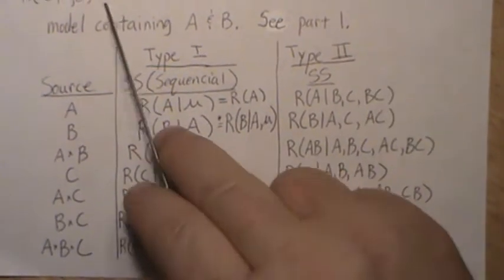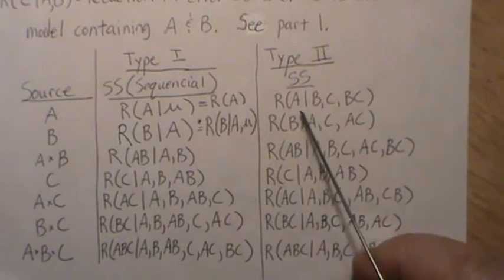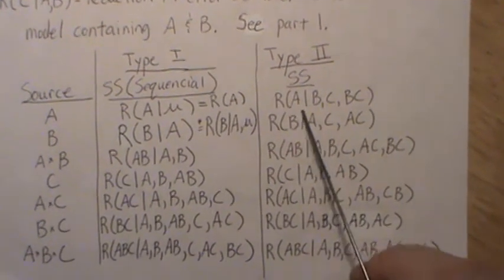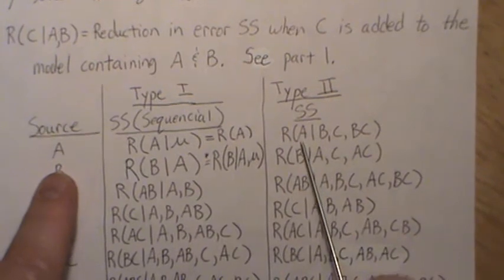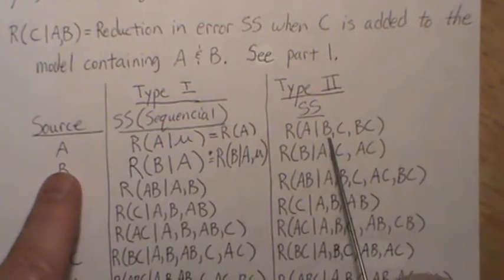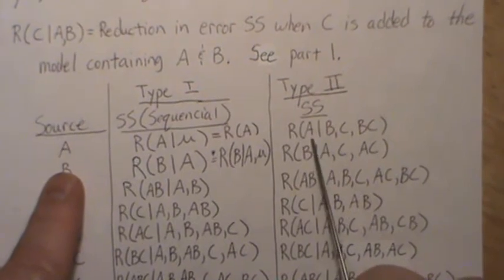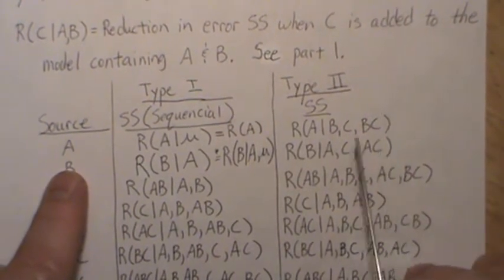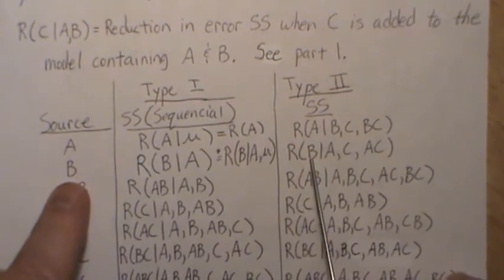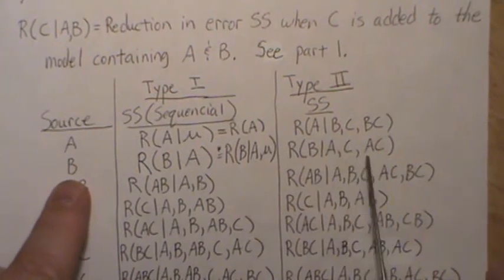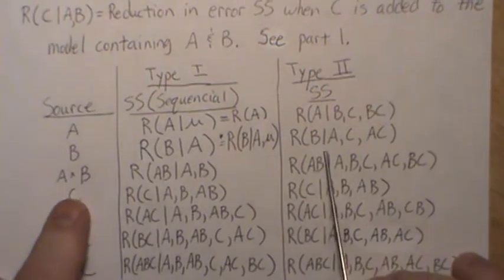For type 2 sums of squares, the order in which the terms are added to the model does not matter. What matters is higher-order terms. For R(A), it's the reduction in the sum of squared error when A is added to the model that already has B, C, and the BC interaction — notice there are no interaction terms involving A. Then for B, it's the reduction when B is added given A, C, and the AC interaction — every other term except higher-order terms that contain B.